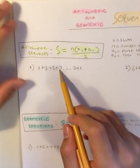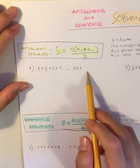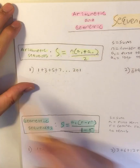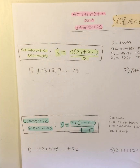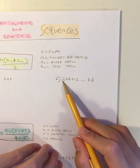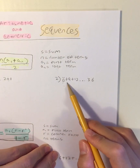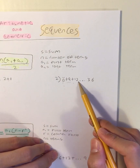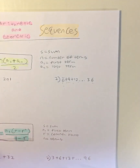So basically that's what an arithmetic sequence is. And when you add all of them up, I'm going to show you that in a bit. In this case, this is also an arithmetic sequence because 6 plus 3 is equal to 9, 9 plus 3 is equal to 12, and so on until 36. And that's what an arithmetic sequence is.